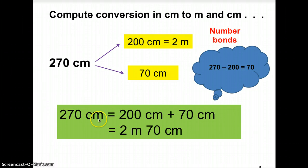270 centimeters is equals to 200 centimeters plus 70 centimeters. And here, do remember to use the conversion, your formula, 200 cm is equals to 2 meters. And we'll just write 70 cm here. And this will be your final answer.